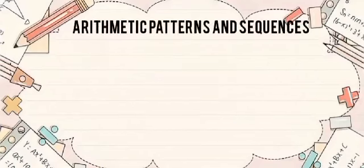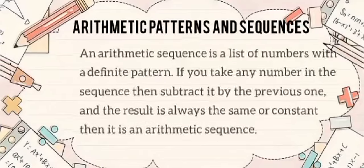Arithmetic Patterns and Sequences. An arithmetic sequence is a list of numbers with a definite pattern. If you take any number in the sequence then subtract it by the previous one, and the result is always the same or constant, then it is an arithmetic sequence. An arithmetic sequence is a sequence of numbers such that the difference of any two successive members of the sequence is a constant.